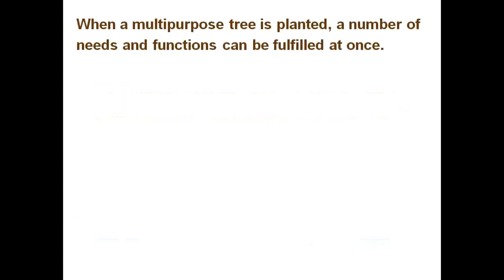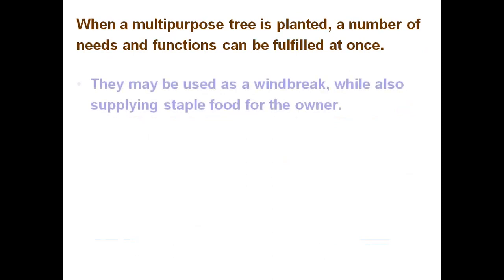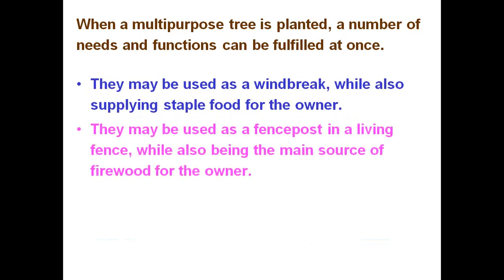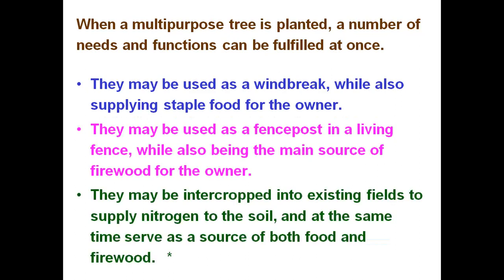When a multipurpose tree is planted, a number of needs and functions can be fulfilled at once. They may be used as a windbreak while also supplying staple food for the owner. They may be used as a fence post in a living fence while also being the main source of firewood. They may be intercropped with existing fields to supply nitrogen to the soil, while at the same time serving as a source of both food and firewood.